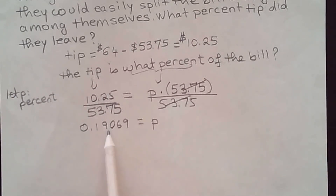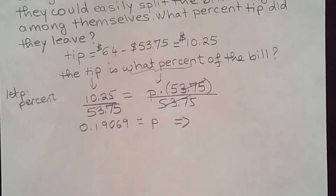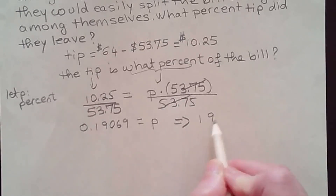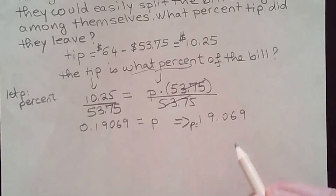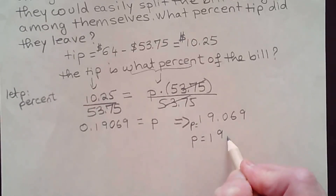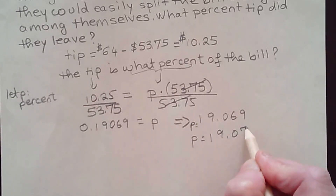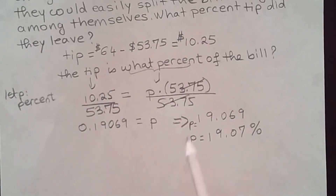This is in decimal form, so you have to multiply by 100 percent. You move the decimal two digits to the right, so it's going to be 19.069. They really want this rounded to two decimal places, so p must be equal to 19.07%. And that is your answer.